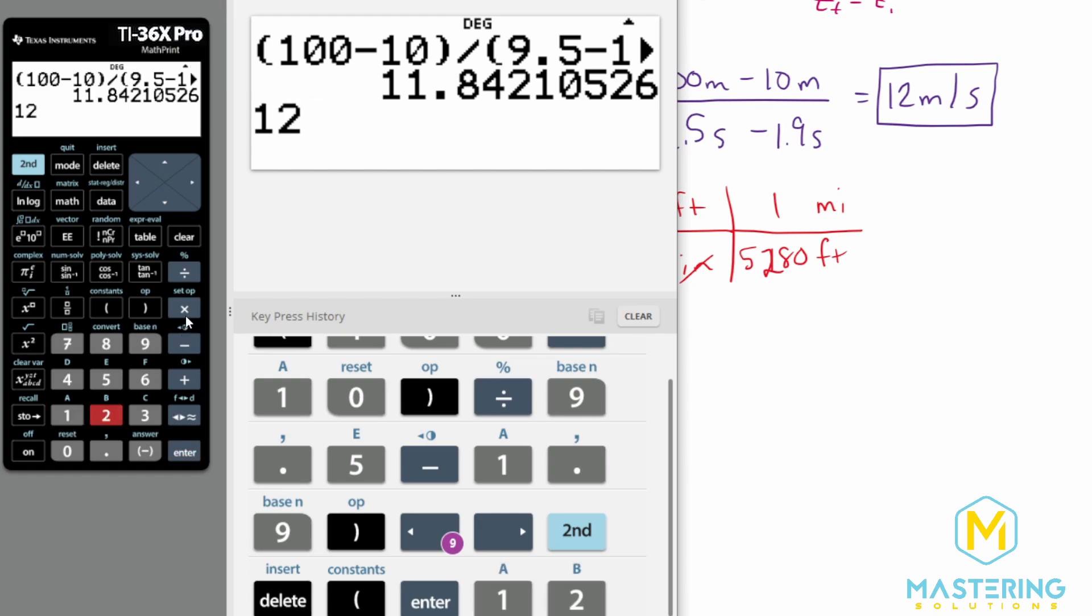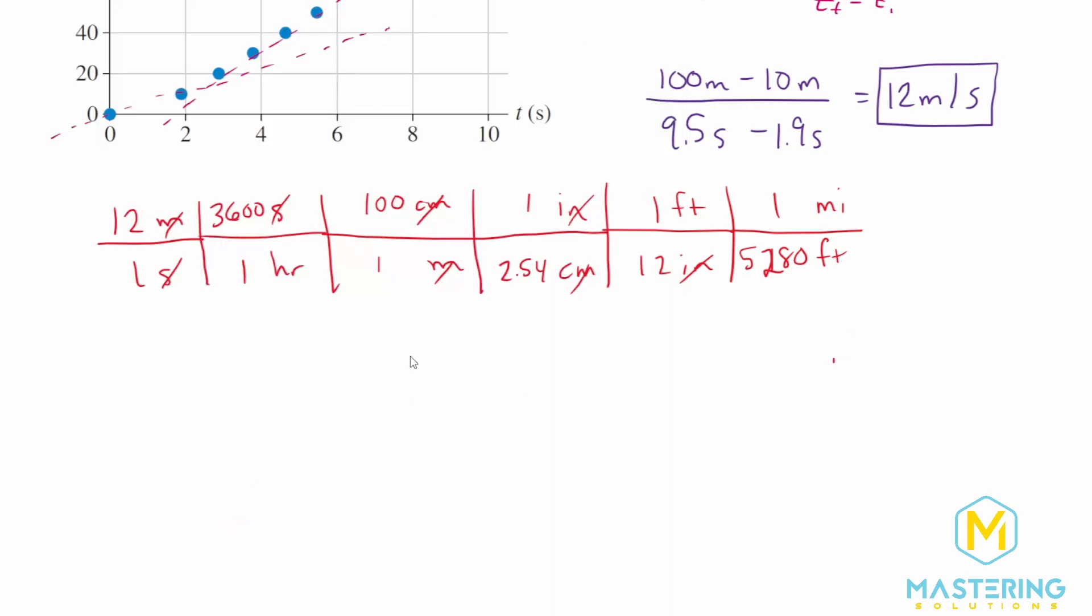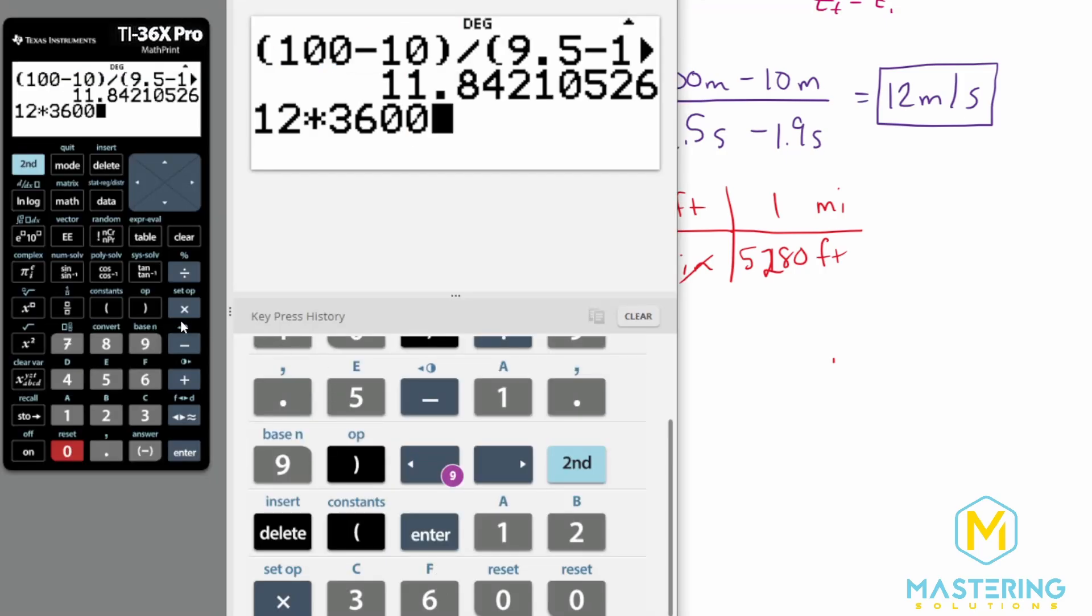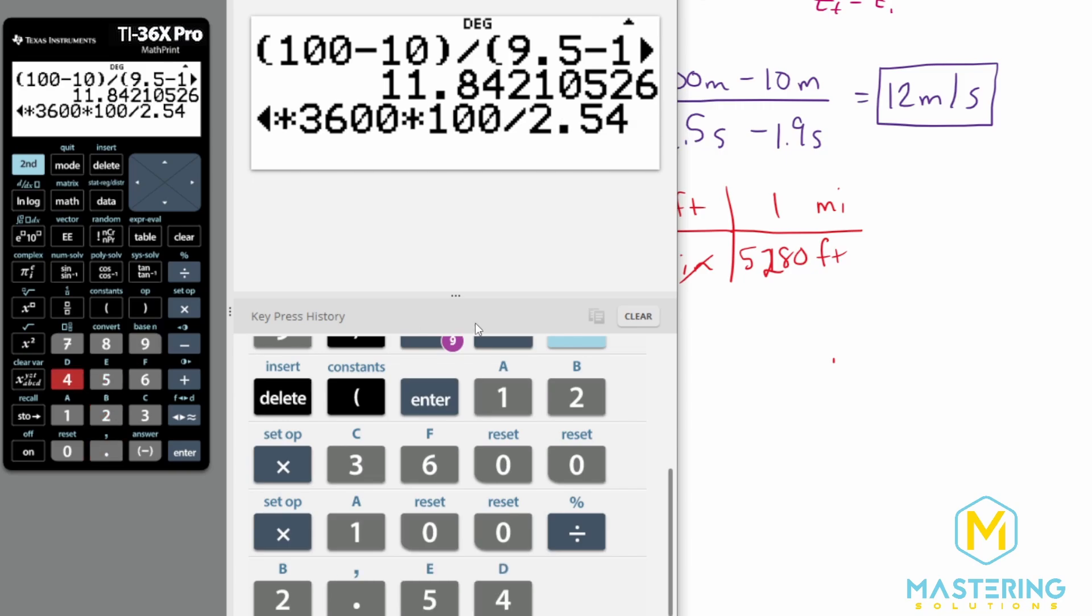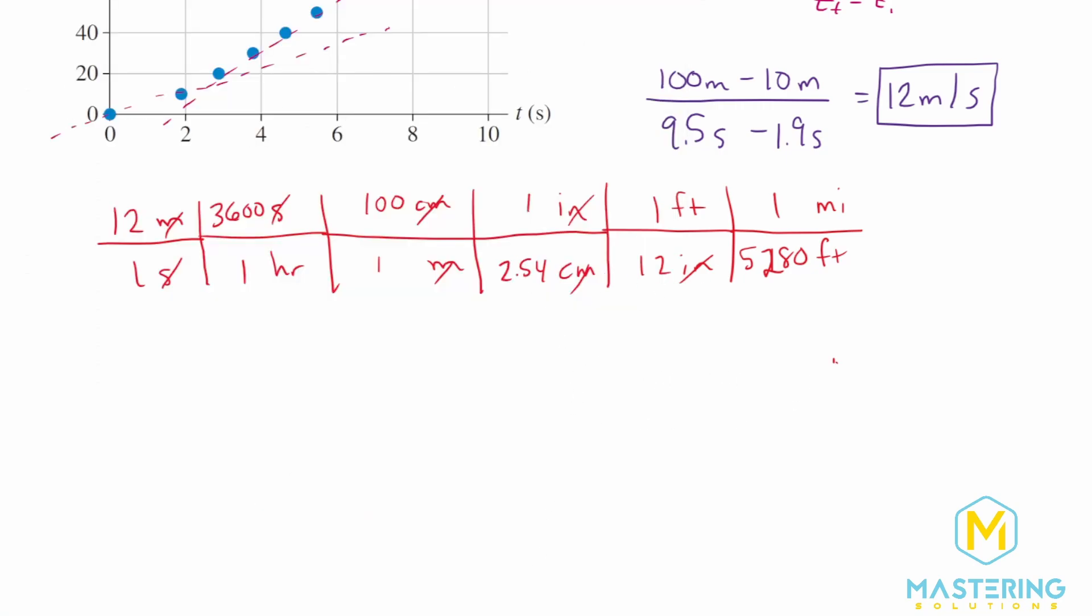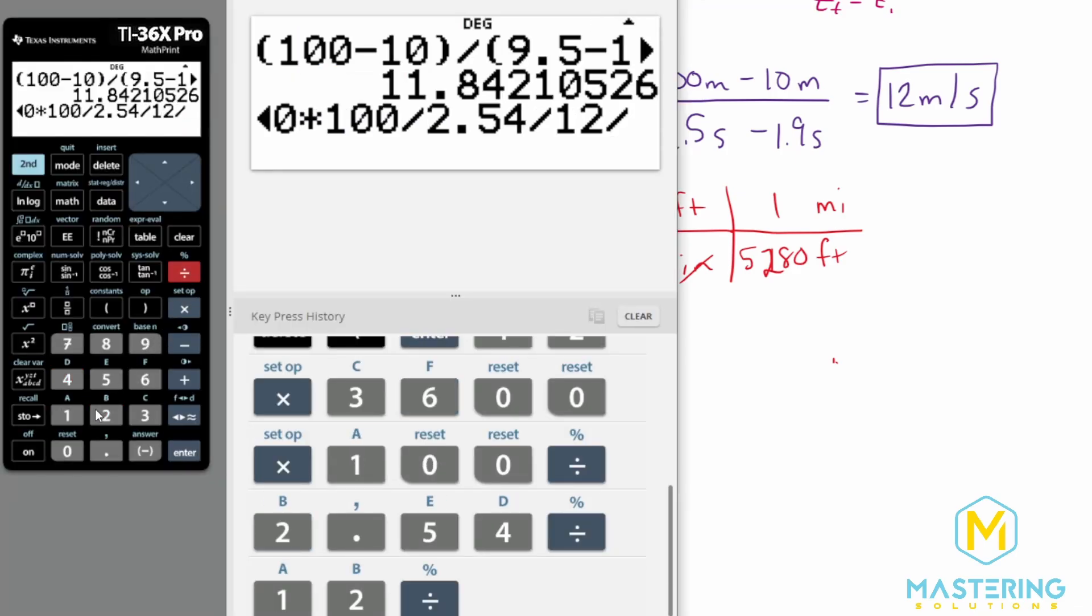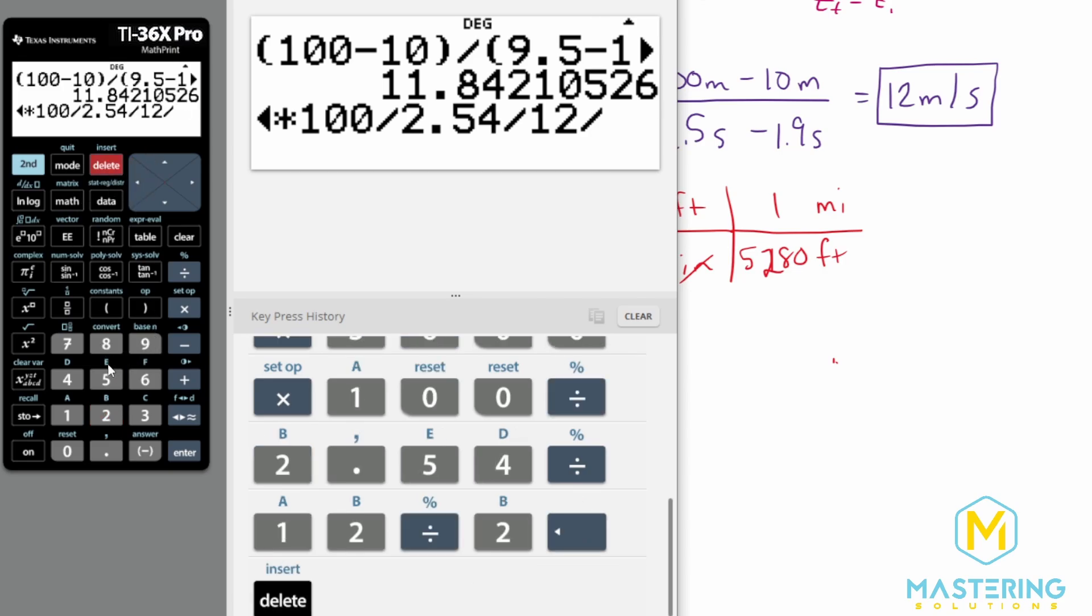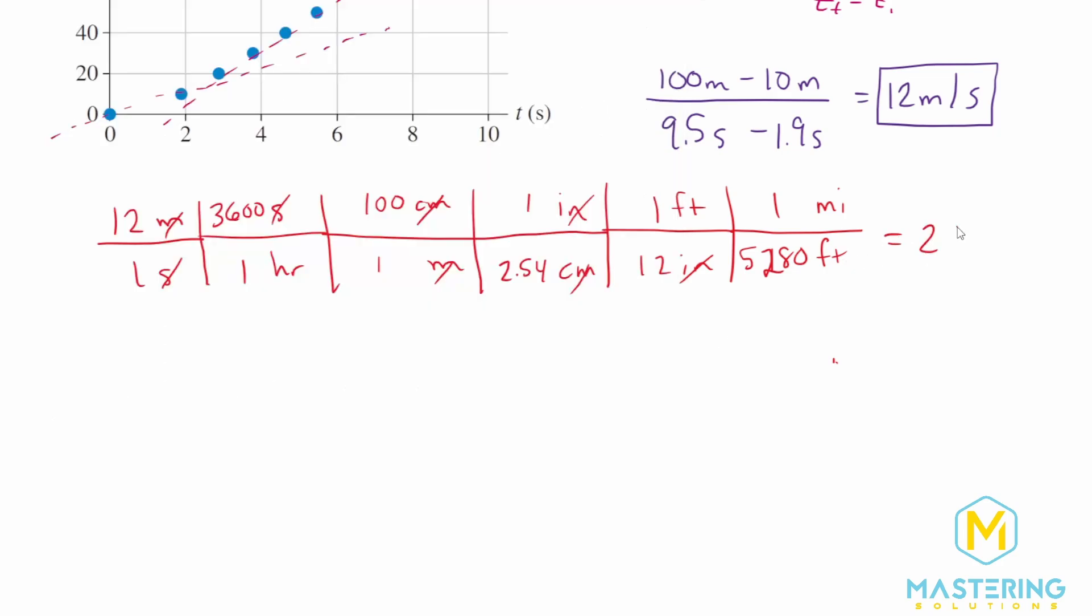So we have 12 times 3,600, and then we have 100, 2.54. So multiply by 100 and then divide by 2.54. Now we have divide by 12 and divide by 12 and then divide by 5,280 to put us into miles per hour. So that gives us 26.84. So it is 26.8 miles per hour.